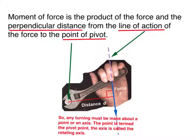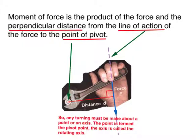It is very important to note that for any turning to happen, it must be made about a point — this point is called the pivot — or about an axis, which is called the rotating axis.